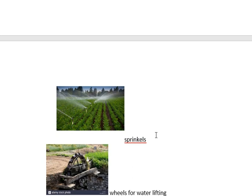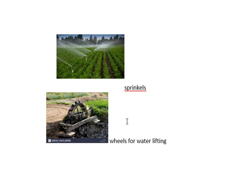Another method of irrigation is the sprinkler method, where sprinklers are set up in the fields and water is distributed over the crops. This helps farmers save a lot of water and is commonly used in Gujarat, Rajasthan, and Madhya Pradesh. Another older method is the water-lifting wheel, which is not very commonly used in India today. Out of all these methods, the main source of water for crop irrigation is rain.